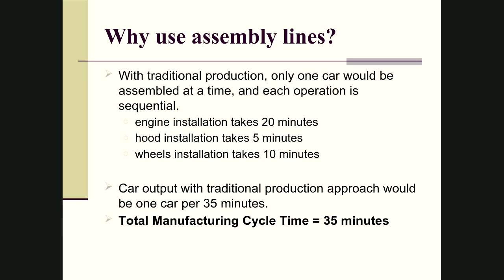With the traditional approach, only one car would be assembled at a time and the operation times are given. These are sequential: it takes 20 minutes to install the engine, 5 minutes to place the hood, and 10 minutes to put on the wheels — again, just hypothetical numbers. Using this traditional approach, our total manufacturing cycle time from beginning to end is 20 plus 5 plus 10, giving us a total manufacturing cycle time of 35 minutes.